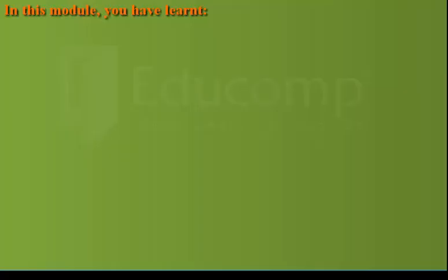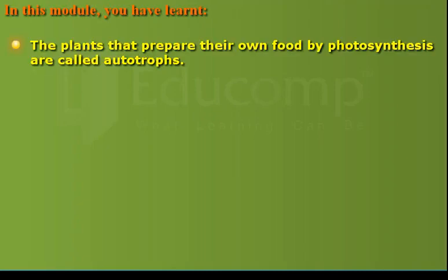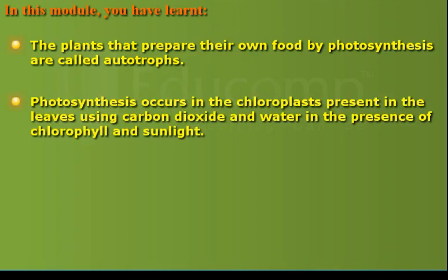In this module, you've learned that plants which prepare their own food by photosynthesis are called autotrophs. Photosynthesis occurs in the chloroplasts present in the leaves, using carbon dioxide and water in the presence of chlorophyll and sunlight.